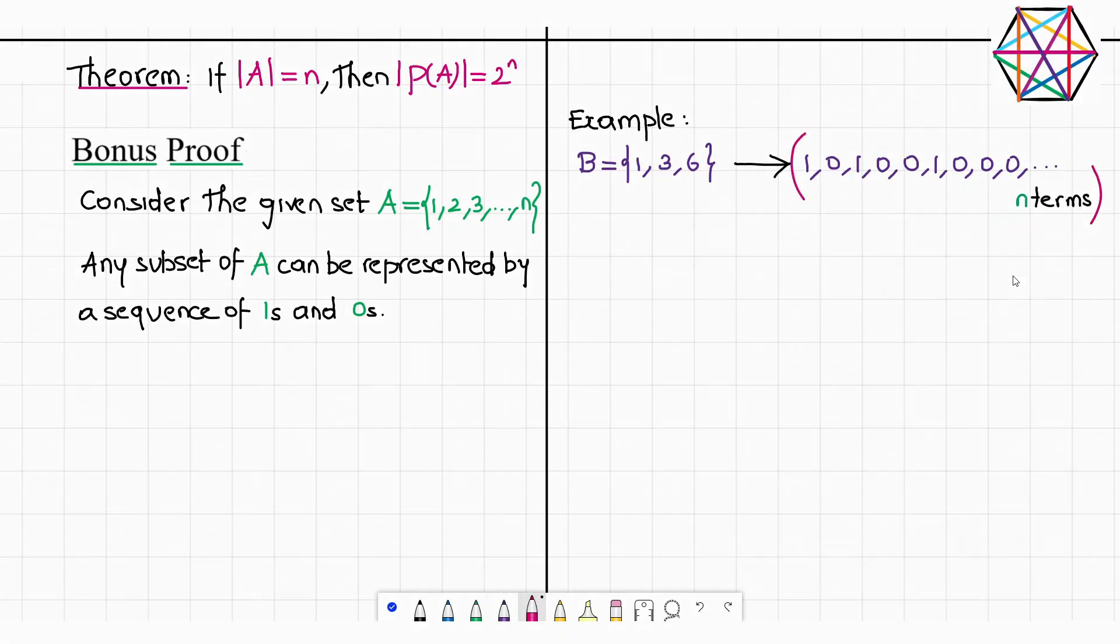So I just claimed that this set B with elements 1, 3, and 6 can be denoted by this sequence of 1s and 0s, right? So what is the meaning of it? What is this 1? What does it represent? Now go to this original set A. This number 1, this element 1 is also part of the set B, so we denote it by 1, which indicates that this particular element is part of this subset.